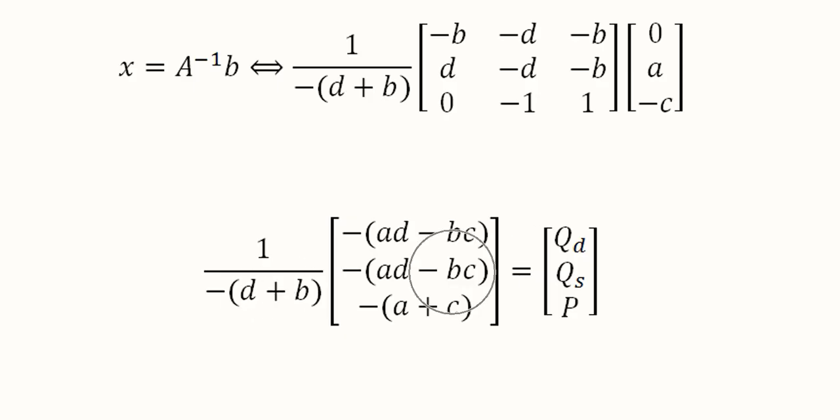Qs also has the same value because at equilibrium both of them are equal, and price has this value which is minus bracket start a plus c bracket close divided by minus d plus b bracket close. So equilibrium values are found by using the matrix inversion method.